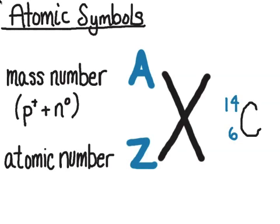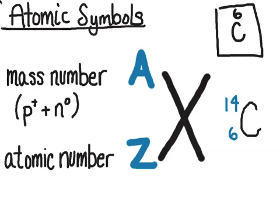We also have the number below, and that's the atomic number. The atomic number Z represents the number of protons in a particular element. If you look on the periodic table, this is a cartoon of an entry for carbon — you see a number above carbon, that number 6, which is the atomic number. Then you'll see a number below that, and that's the average atomic mass for all forms of carbon, not just carbon-14.